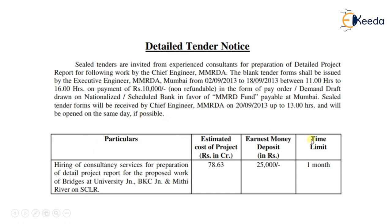There is a table where particulars will mention the detailed explanation about the work. For example, for construction of a school building, you can write 'construction of a school building G+5 in the locality with area so-and-so.' You can mention the estimated project cost, earnest money, and time limit here. This is the tender notice format.